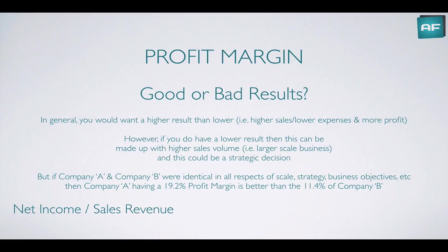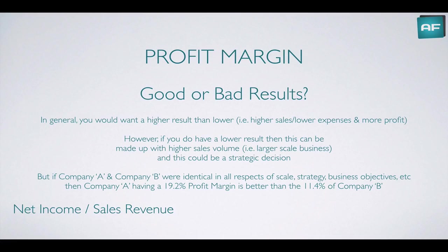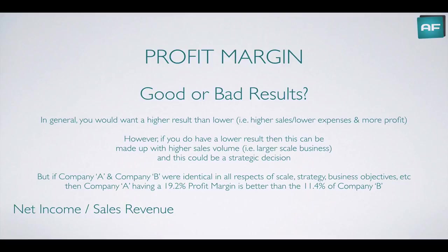However, if you do have a lower result, then this can be made up with higher sales volume — higher turnover — in other words, it's a larger scale business, and this could be a strategic decision. For example, many large and global retailers work on very small profit margins, but they're still very profitable businesses. They're just global in scale and have millions or billions of products sold, and are able to compensate for that lower profit margin with being much larger businesses.